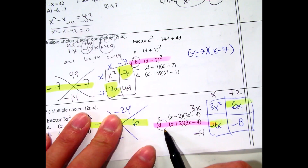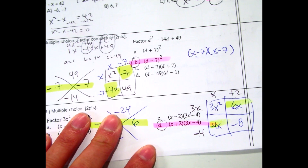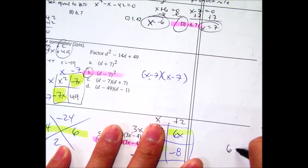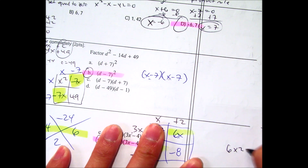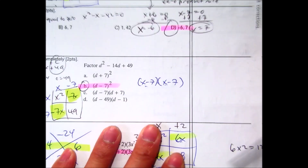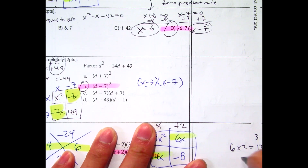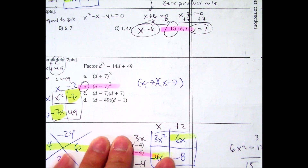That is choice D — your correct answer. That page has 6 multiple choice questions at 2 points apiece, so that's 12. And for writing your name neatly — first and last name plus your period — that's 3 more, so this side is out of 15.